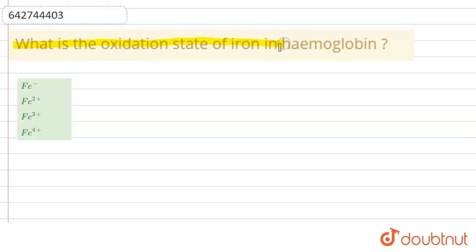The question here is: what is the oxidation state of iron in hemoglobin? Let's see the answer. Out of the following, we have to choose the correct option.